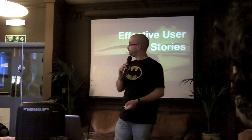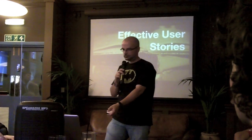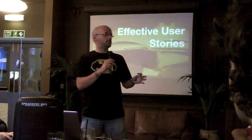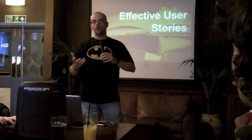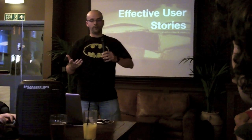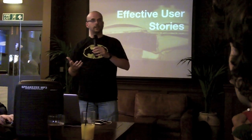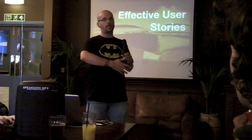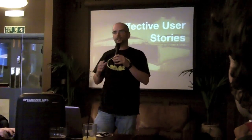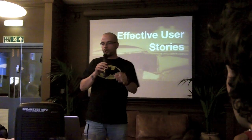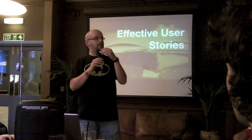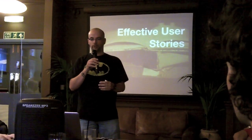Okay, so Scrum starts with the Product Backlog, and the Product Backlog is full of stories. The stories describe the work that needs doing, and they can come from any source — from you, from stakeholders, from anyone in the business. They live in the Product Backlog, which is the root of the Scrum process.